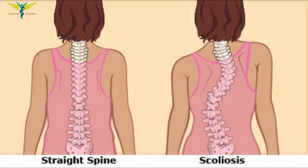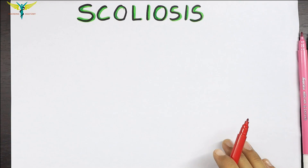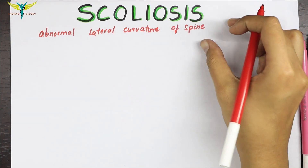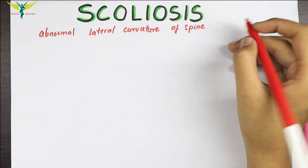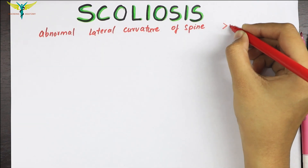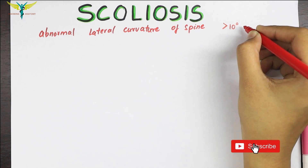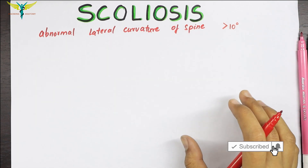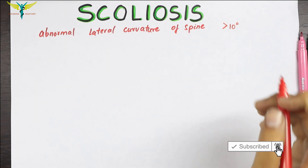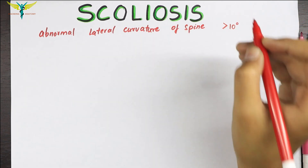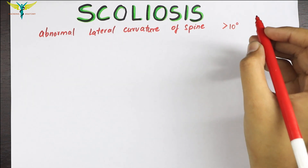Scoliosis is an abnormal lateral curvature of the spine. This lateral curvature can be greater than 10 degrees, which can be associated with the rotation of the vertebrae.